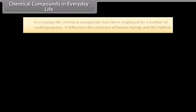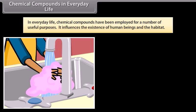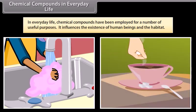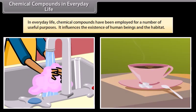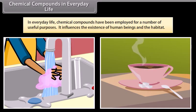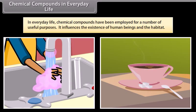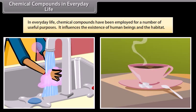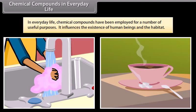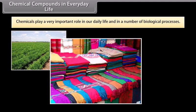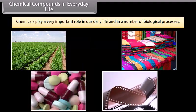In everyday life, chemical compounds have been employed for a number of useful purposes. For example, sugar is used to sweeten tea, and soaps are used for washing and bathing. They influence the existence of human beings and the habitat. A number of compounds also find application in agriculture, textiles, medicines, photography, etc. Thus, chemicals play a very important role in our daily life and in a number of biological processes.